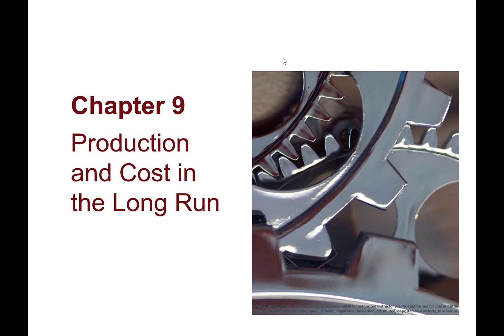Hello everyone, this is Chapter 9: Production and Cost in the Long Run. No matter how a firm operates in the short run, its manager can always change things at some point in the future. That point in the future is what we refer to as the long run — a period where both capital and labor are variable.